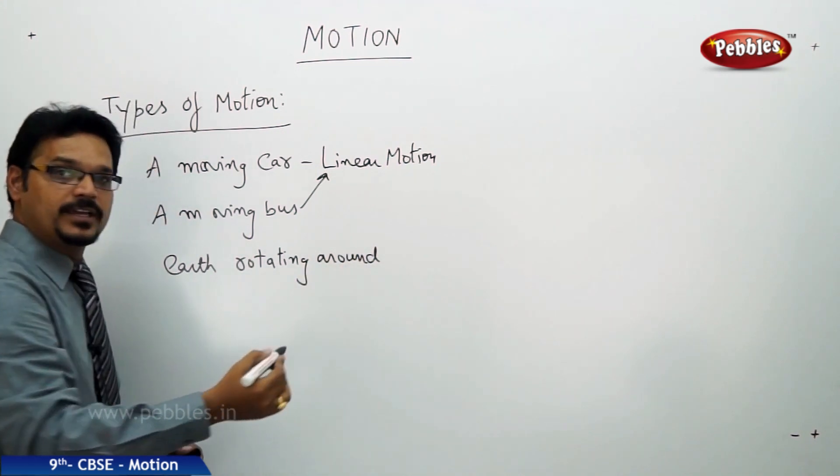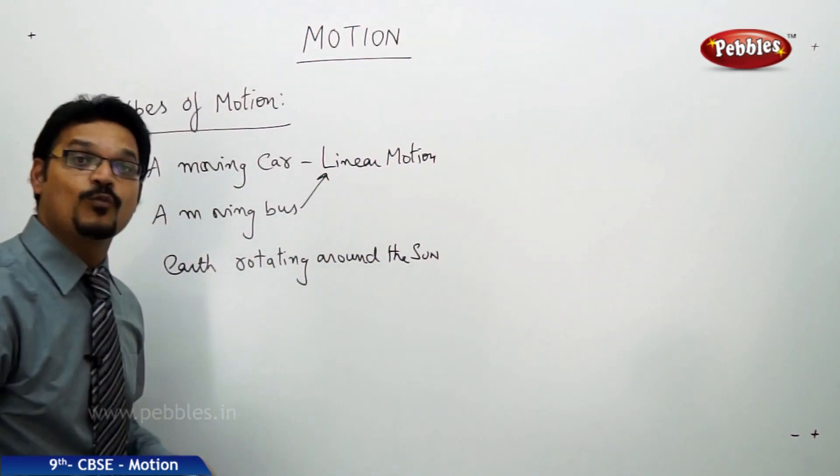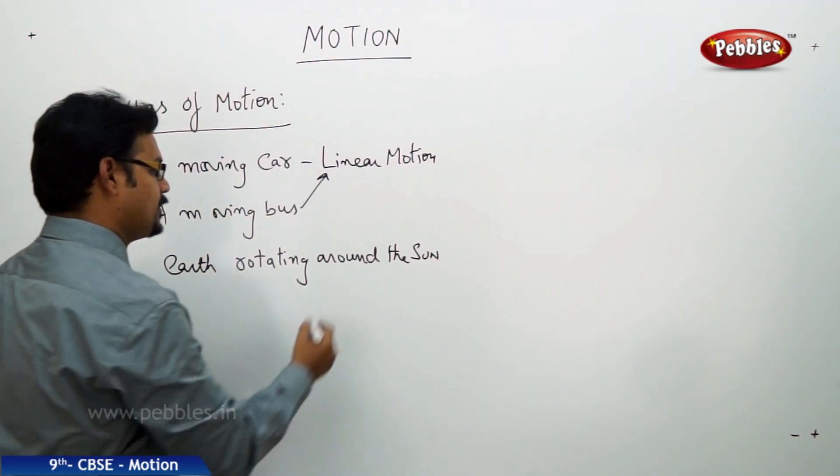Earth rotating around the Sun, what type of motion? Yes, it is circular motion.